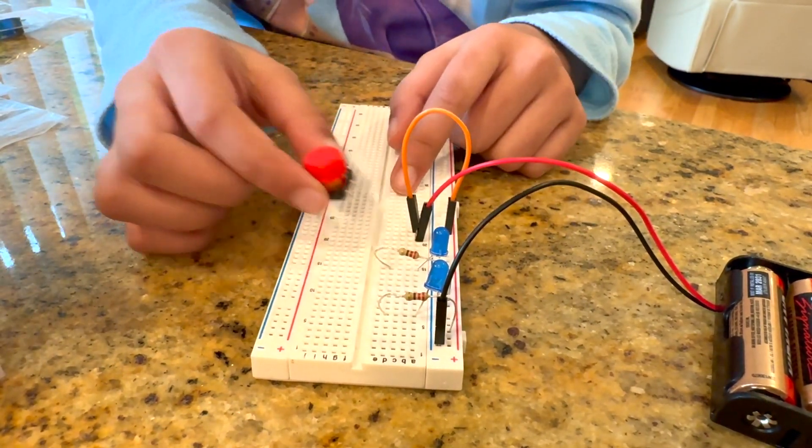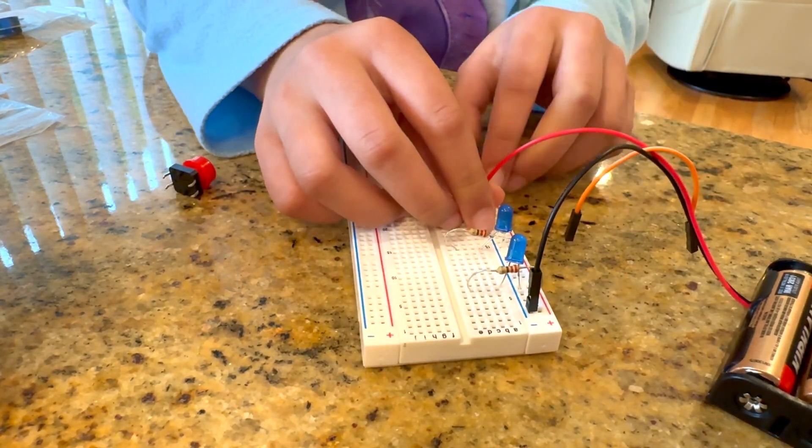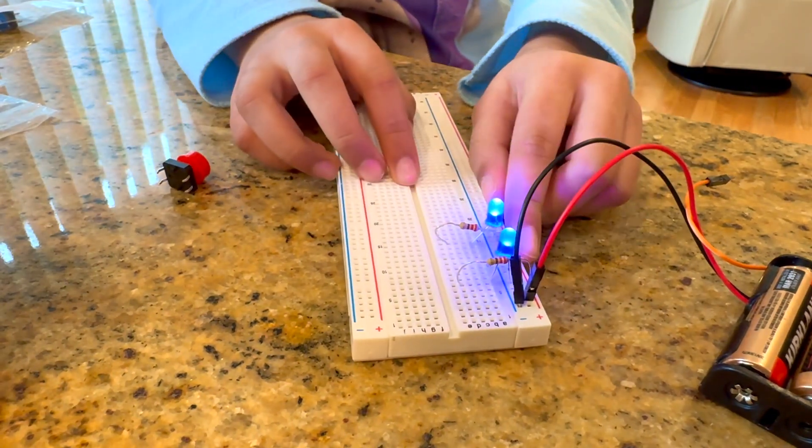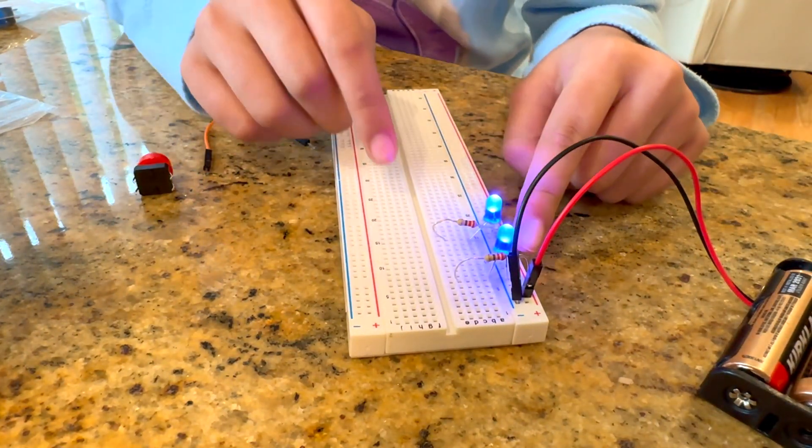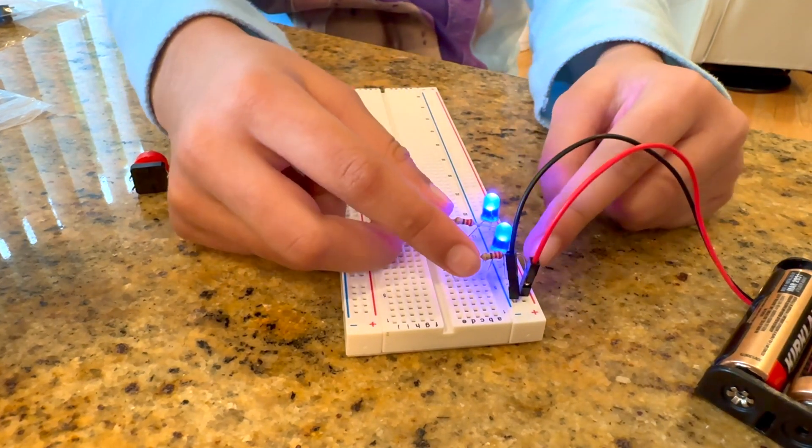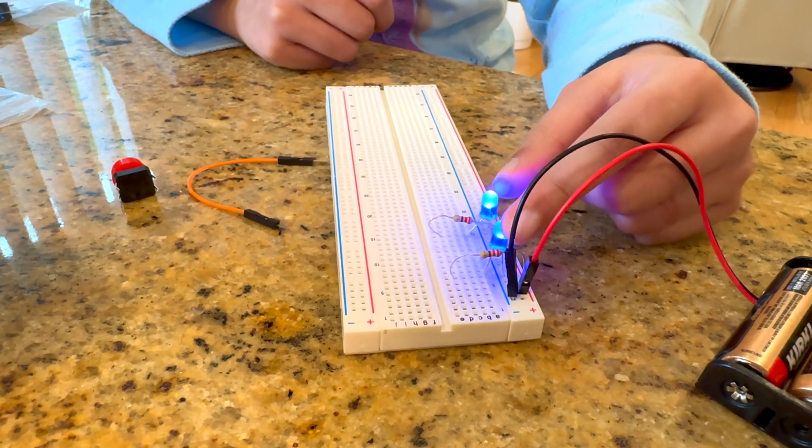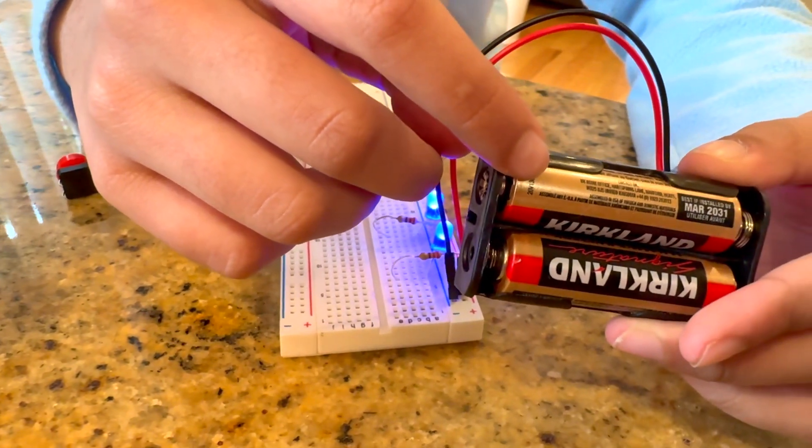Now, I'll show you how to make this. We'll start out with the circuit that I showed you earlier, with two 220-ohm resistors and two blue LEDs, and two AA batteries.